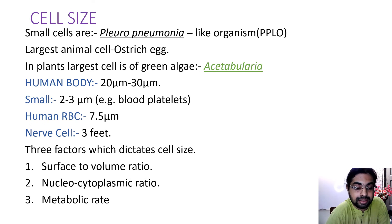In plants, the largest cell is of green algae, that is Acetabularia. In human body, the cell size generally ranges from 20 micrometer to 30 micrometer. It is very important to note, but blood platelets - this is the human body cell size is 20 micrometer to 30 micrometer, this is general, but exceptions are obviously there. Blood platelets, these are 2 to 3 micrometer in size. Human RBC is 7.5 micrometer. Nerve cell is 3 feet, it is the longest in the human body, 3 feet.